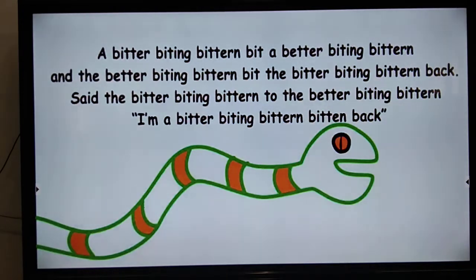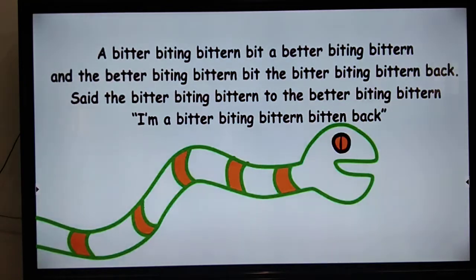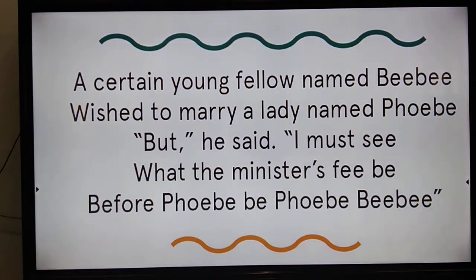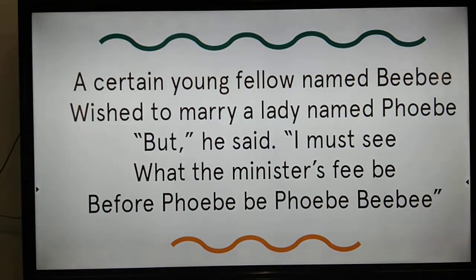For homework, I want you to practice all these tongue twisters and record them as voice messages to send to me. Here is one: 'A bitter biting bittern bit a bitter biting bittern, and the better biting bittern bit the bitter biting bittern back,' said the bitter biting bittern to the better biting bittern, 'I'm a bitter biting bittern bitten back.' Wasn't that interesting? Now try saying that. We also have: 'A certain young fellow named BB wished to marry a lady named Phoebe. But he said, I must see what the minister's fee be before Phoebe be Phoebe BB.'